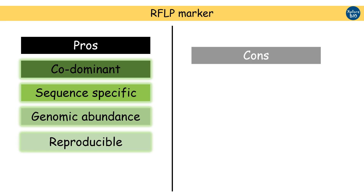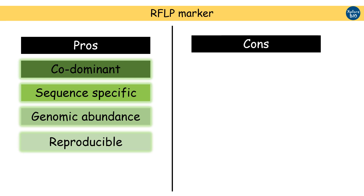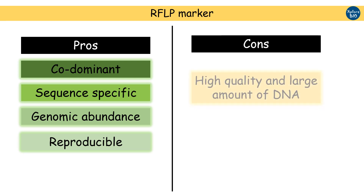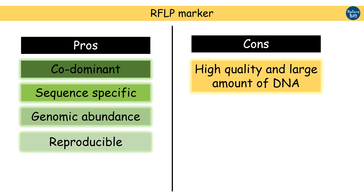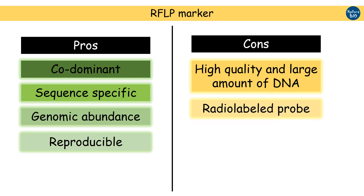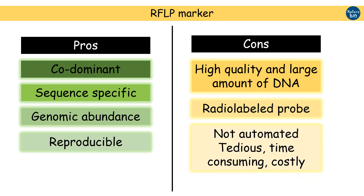However, the major disadvantages of RFLP are that high quality DNA is required, as restriction enzyme activity is highly affected by impurities. Radiolabelling of probes is costly and working with it requires caution. The procedure is long, tedious, costly, and cannot be automated.